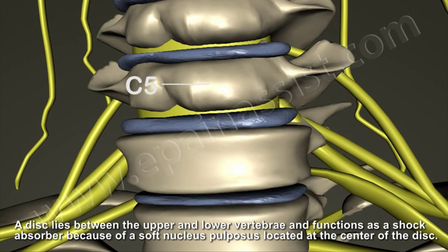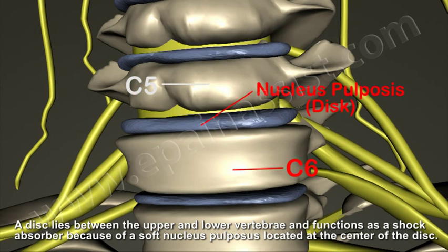A disc lies between the upper and lower vertebrae and functions as a shock absorber because of a soft nucleus pulposus located in the center of the disc.